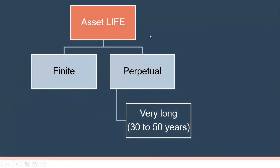The first thing to understand is asset life. Asset life can be either finite or perpetual. In the case of 30 or 50 years of asset life, by way of valuations it could effectively be defined as perpetual. The finite is one which has say 10, 15, or 20 years of life, or where the concession period ends and the asset has to be returned. In cases of finite versus perpetual, there will be a difference in how we view the units of our REITs and INVITs.